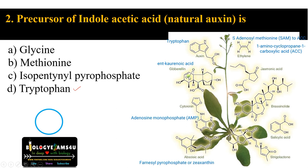Let's have a quick summary of plant hormones and their precursors. Auxin: precursor is amino acid tryptophan. Gibberellin: precursor is acetyl coenzyme A, but the immediate precursor is kaurinoic acid. Cytokinin is an adenine derivative; precursor is adenosine monophosphate. Abscisic acid: precursor is zeaxanthin.